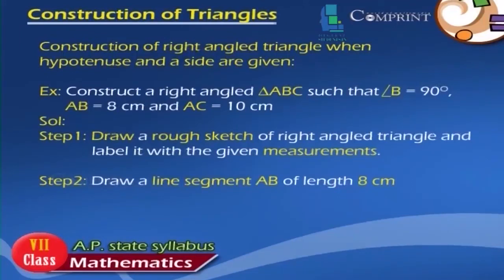Construction of right-angle triangle when hypotenuse and a side are given. Example: Construct a right-angle triangle ABC such that angle B is equal to 90 degrees, AB is equal to 8 cm, and AC is equal to 10 cm. Solution. Step 1: Draw a rough sketch of the right-angle triangle and label it with the given measurements. Step 2: Draw a line segment AB of length 8 cm.